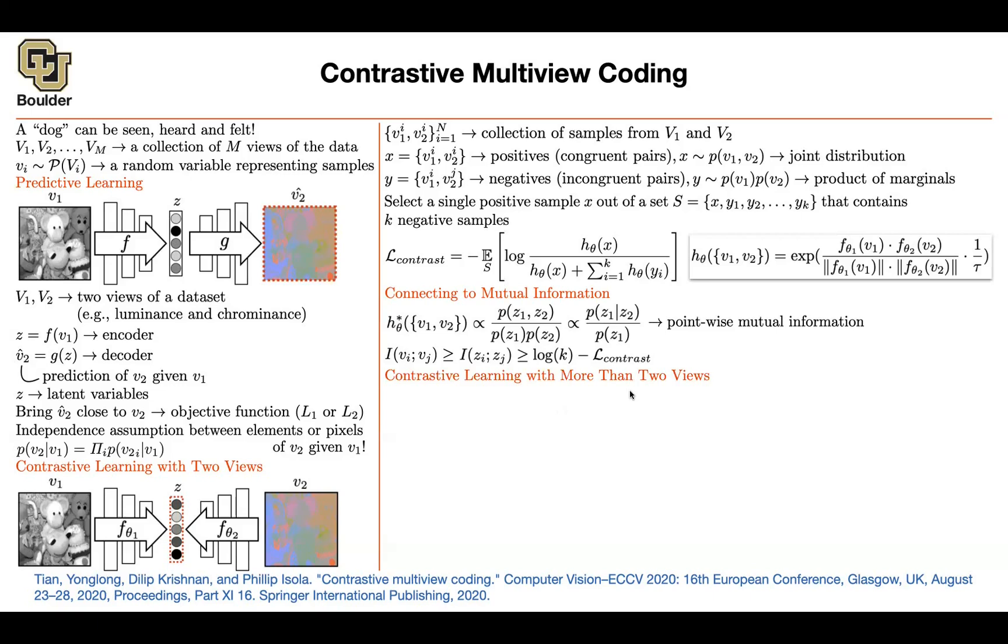Let's continue and say, what if you have multiple views for your scene or for some data sets? You have multiple views. How can you incorporate that? You know that you can look at pairs of views using the contrastive loss.